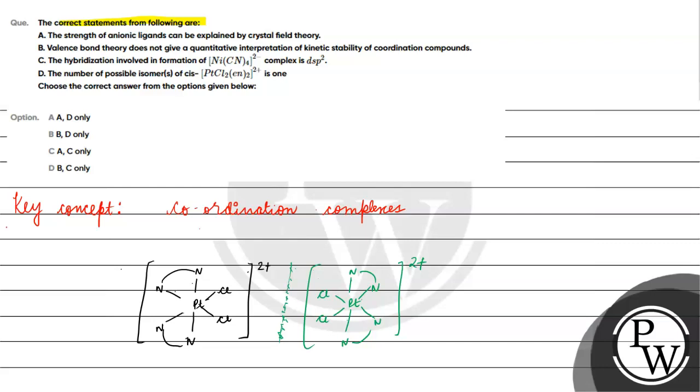Then option A: strength of anionic ligands can be explained by crystal field theory. This statement is incorrect. Strength of anionic ligands, we cannot determine by crystal field theory. Right? For that, only ligand field theory can tell us why a particular ligand is acting as a strong field ligand or why another ligand is acting as a weak field ligand. These things, where do we see them? From ligand field theory only, not from crystal field theory. Right? So this is incorrect.